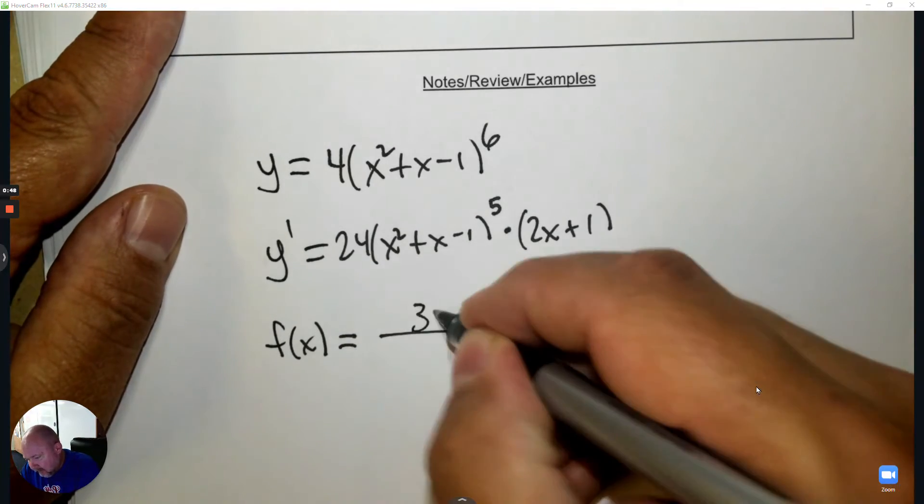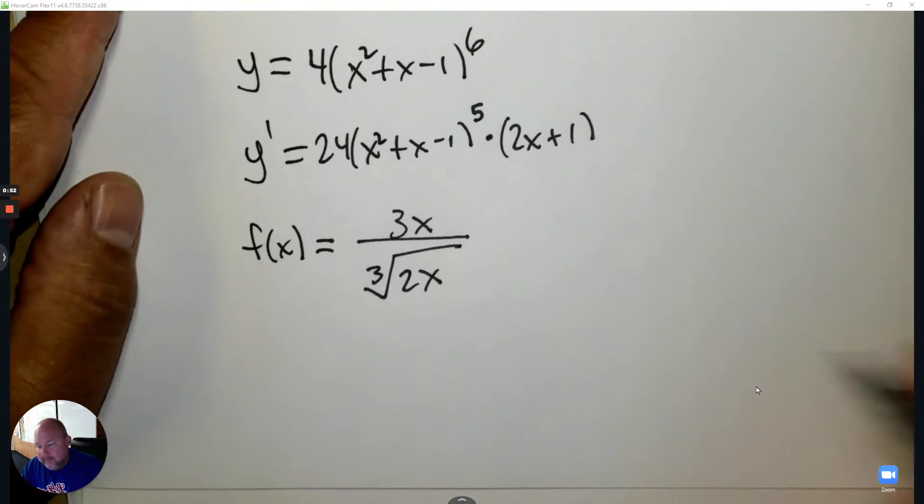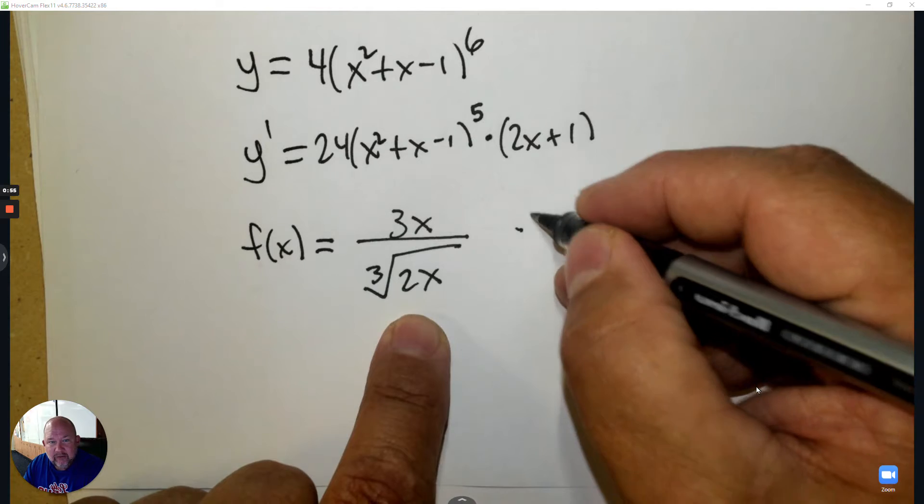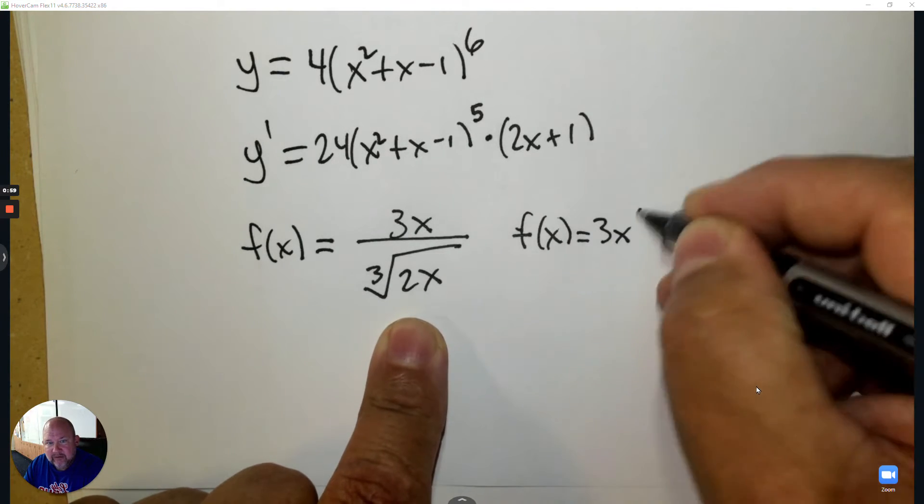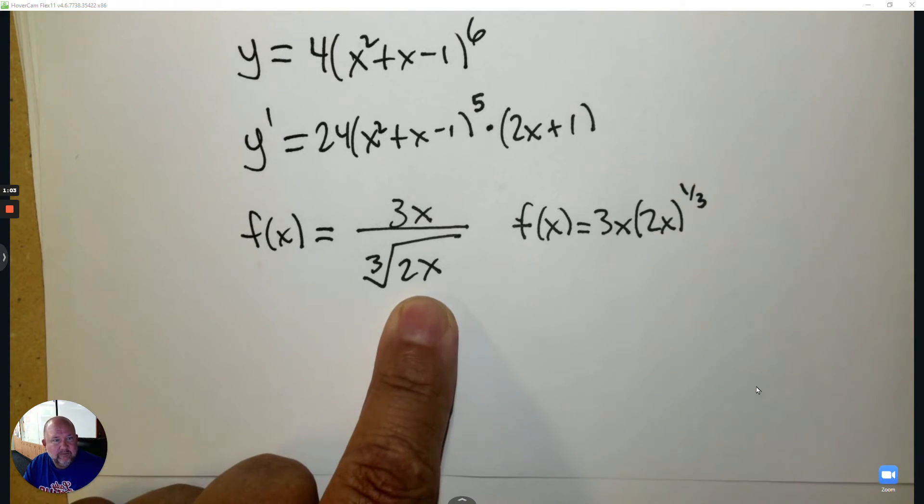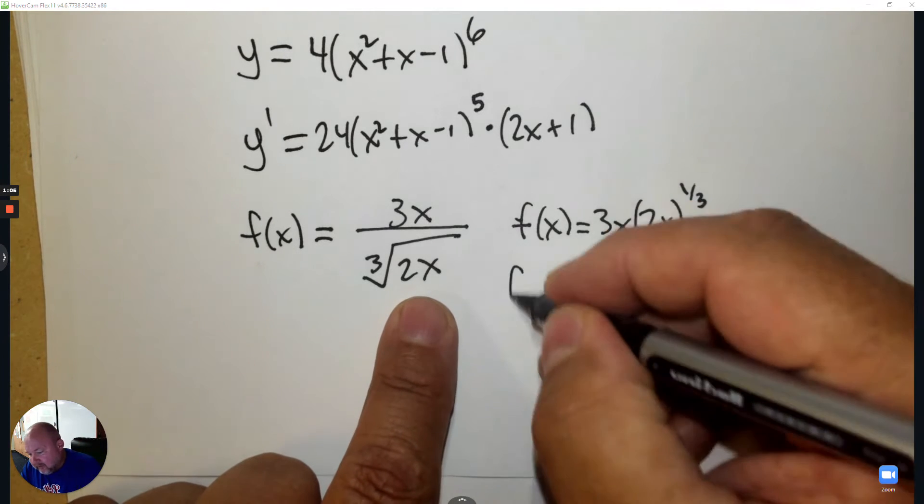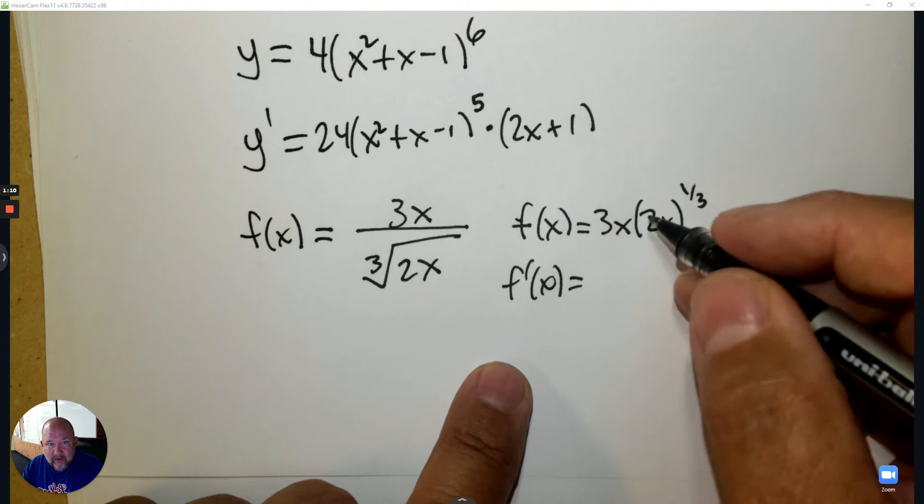Sometimes you've got to be careful here. So let's say I'm a little bit meaner and I give you a function like this. First, we've got to write it friendly. So that would be 3x, 2x to the exponent one-third. And then when we take the derivative, this is actually the product rule and a chain.